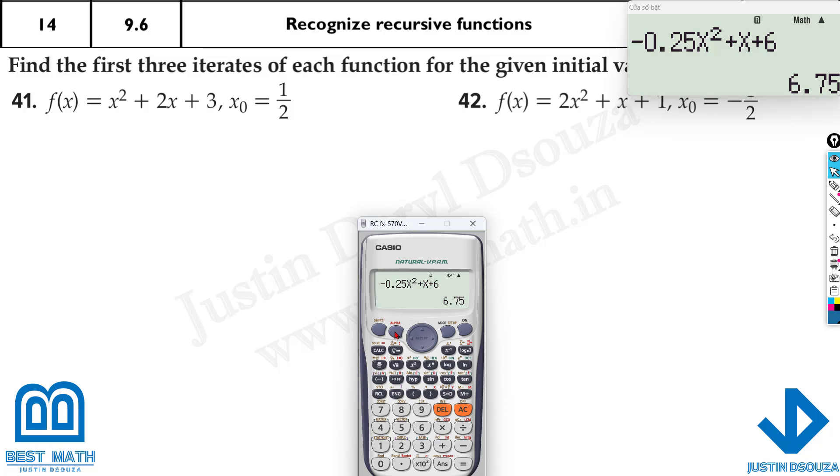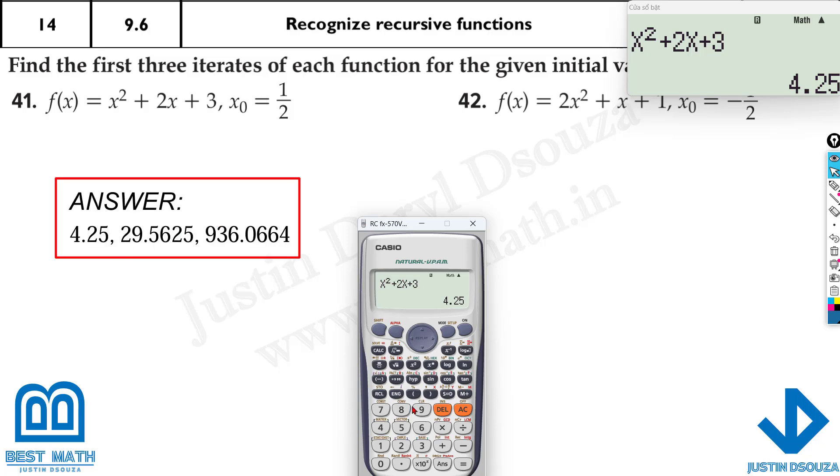Similarly, try them, it's x squared plus 2x and plus 3, calculate it at half, you can write it as 0.5, or you can use this symbol, but here, it will not be a fraction, you need to press 1, then this one, and then 2, or you can use division, or you can use 0.5, it's the same thing, it will be 4.25, that's the first answer.